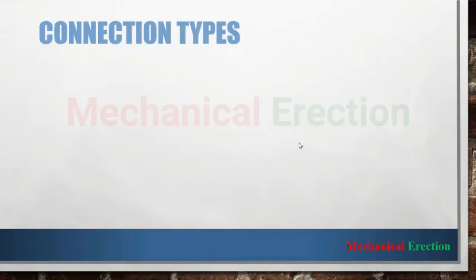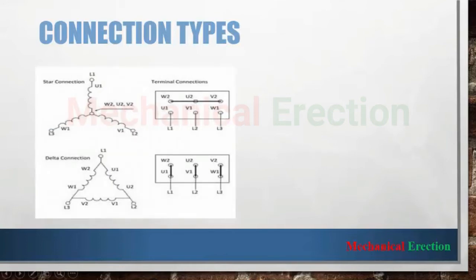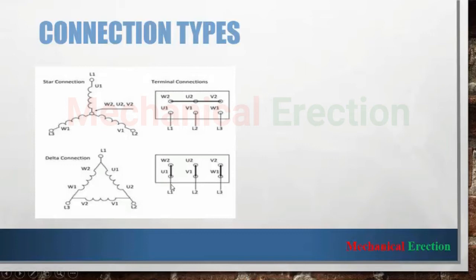Next are the connection types of a motor. There are basically three types for three-phase induction motors. First is star connection, in which one end of each winding is connected to a supply phase while the other end of each winding is joined together to form a star. Then delta connection — in delta connection, all six ends of the three windings are supplied by incoming voltages. Delta is mainly needed for high torque applications where high starting current is required.